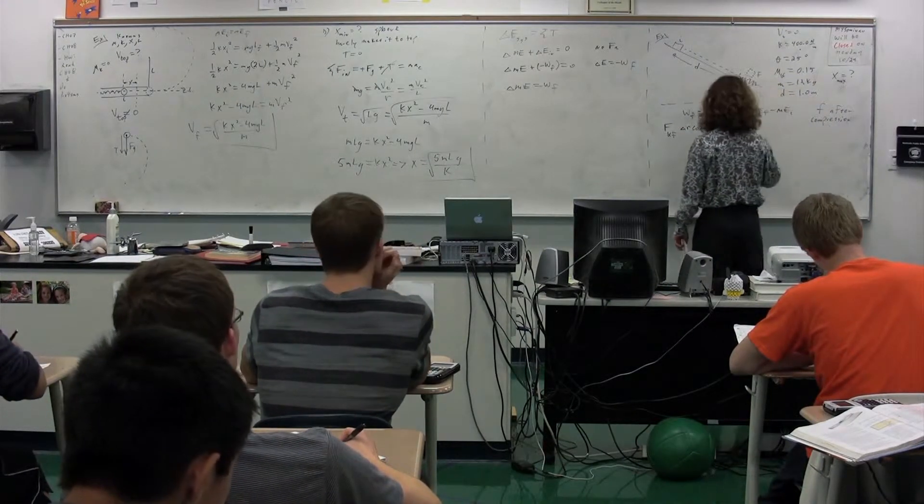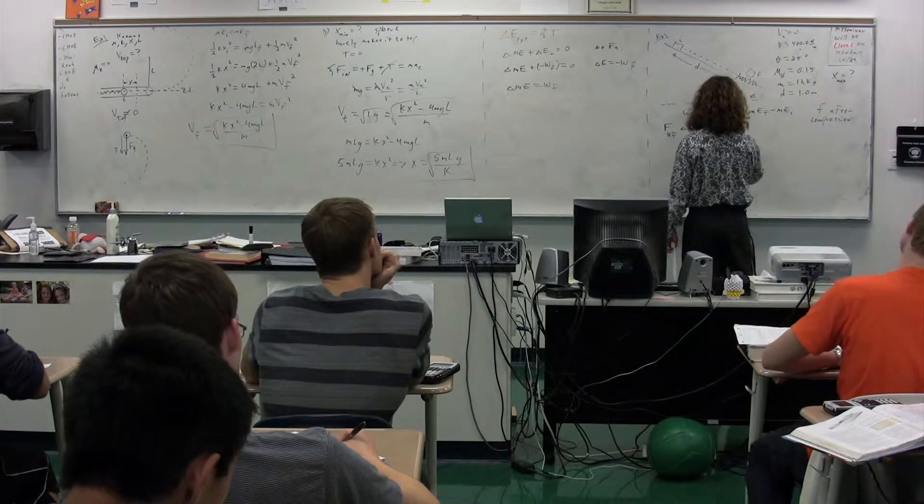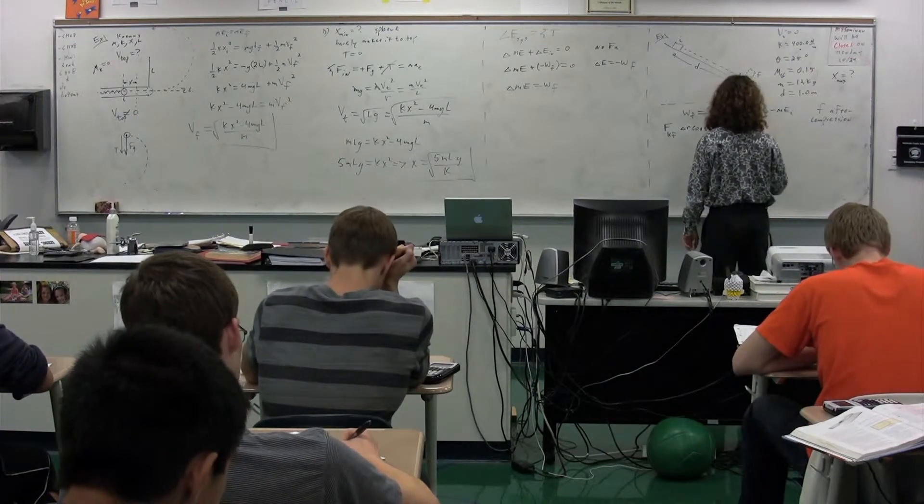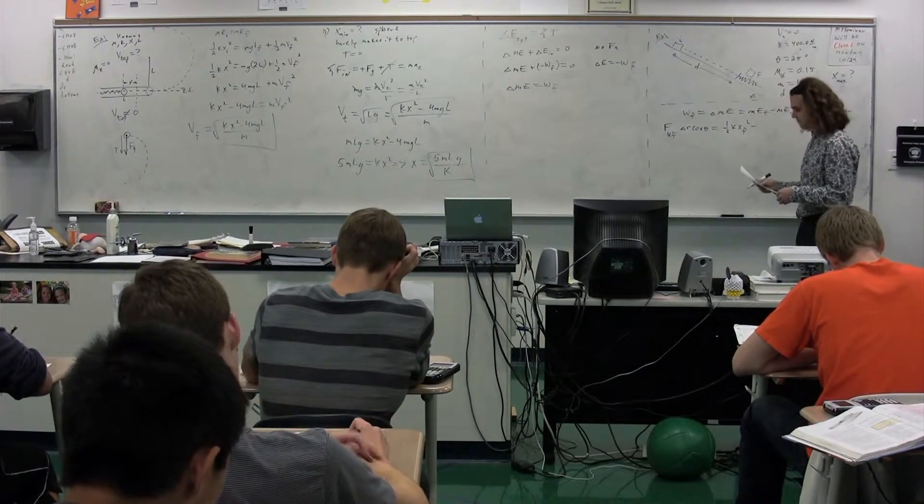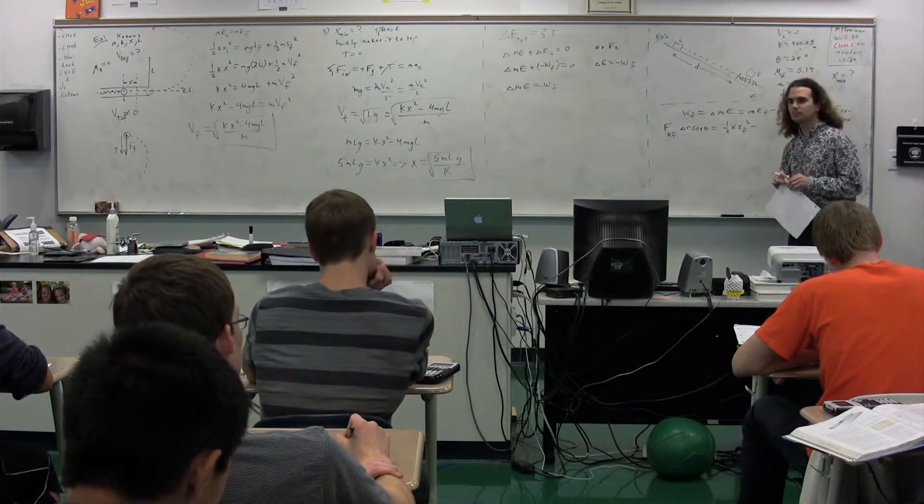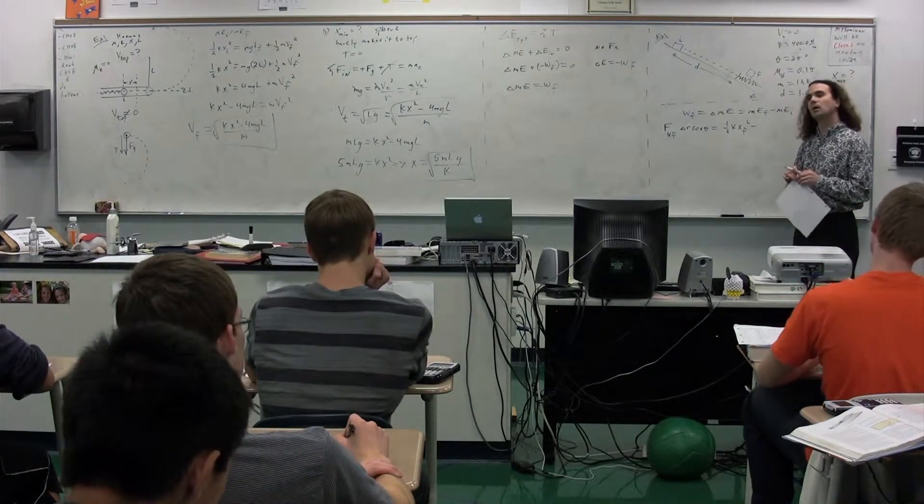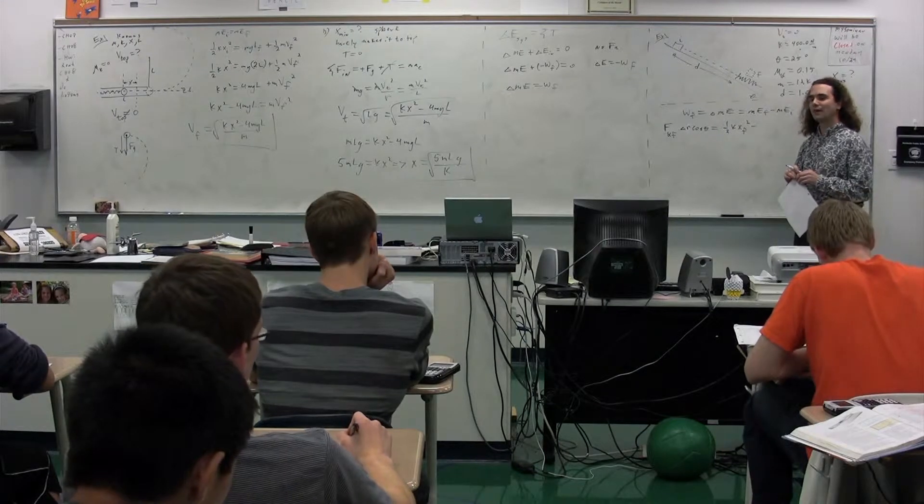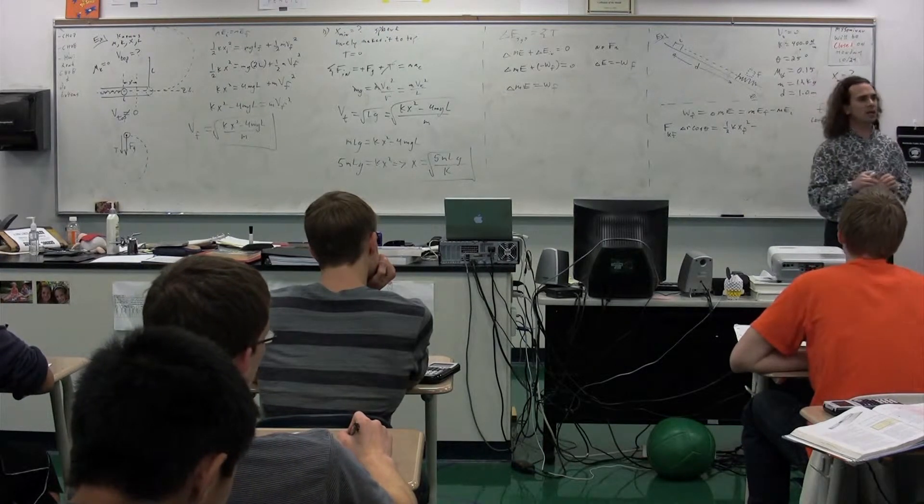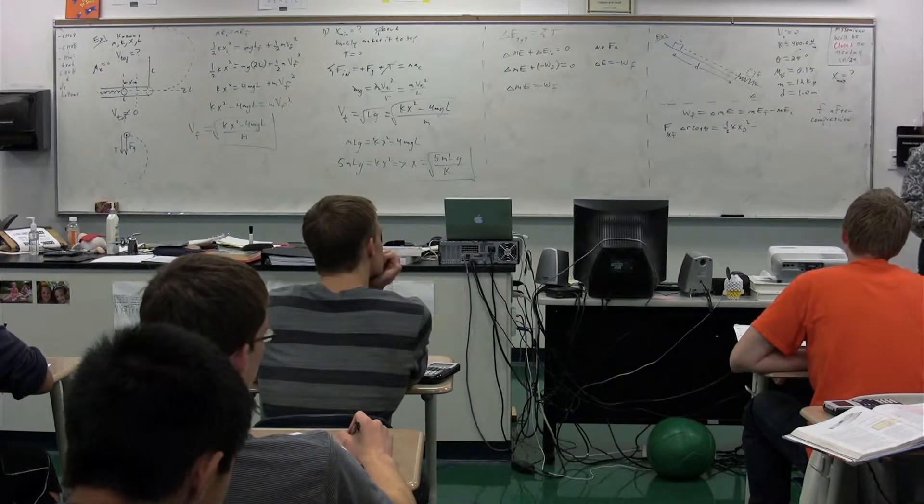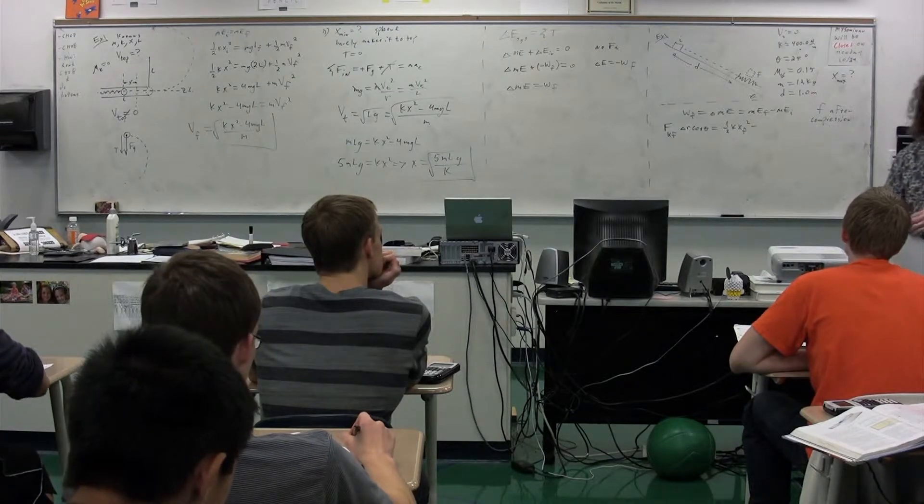One half K X final squared minus what sort of energy does it start with? Gravitational potential energy. Gravitational potential energy. How do we know it starts with gravitational potential energy as opposed to ends with gravitational potential energy?